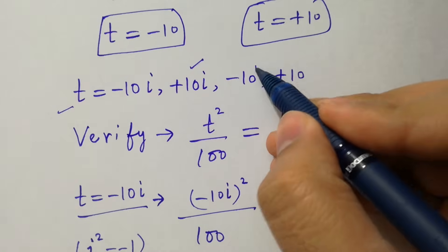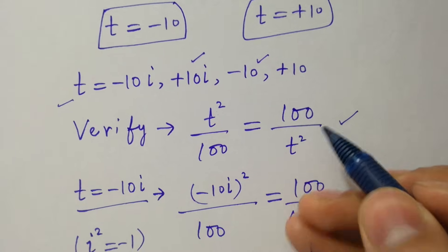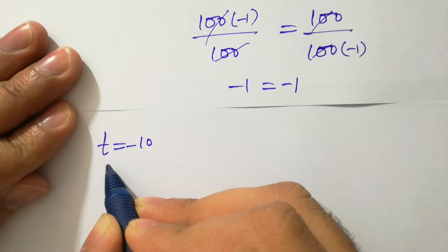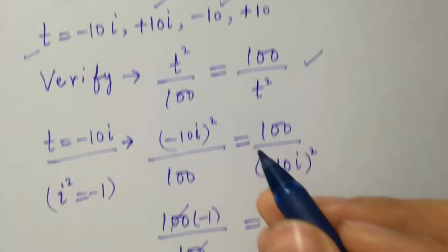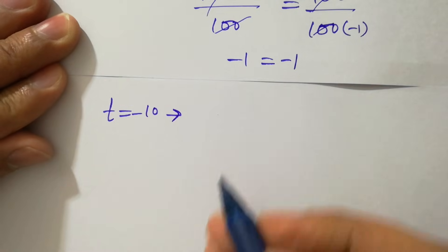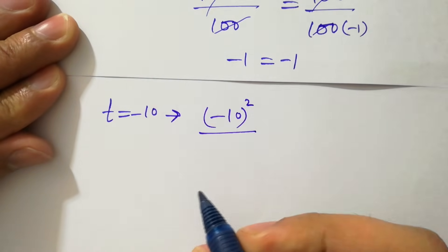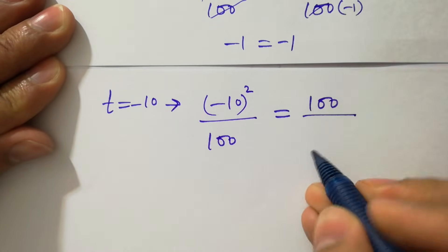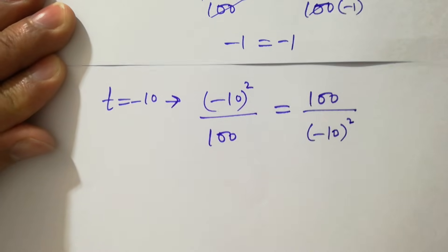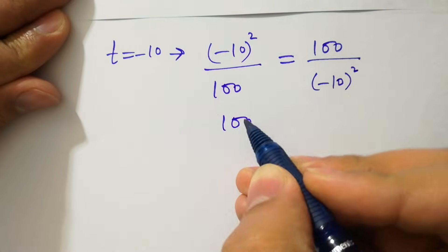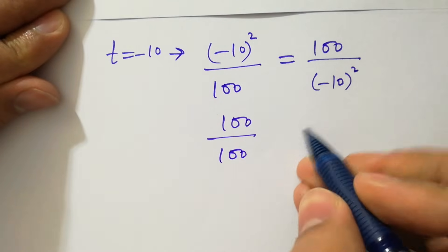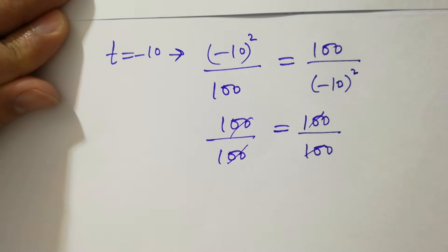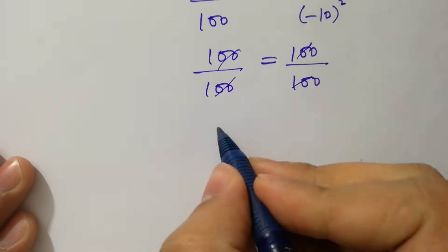Now put t equal to minus 10 into this equation. This equation will be minus 10 squared over 100 equal to 100 over minus 10 squared. Minus 10 squared is 100, so we get 100 over 100 equal to 100 over 100. 100 cancels and we get 1 equal to 1.